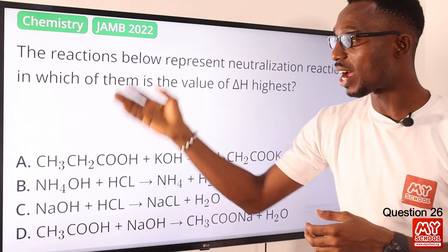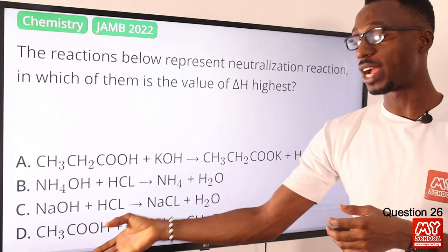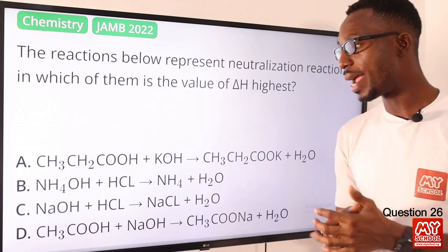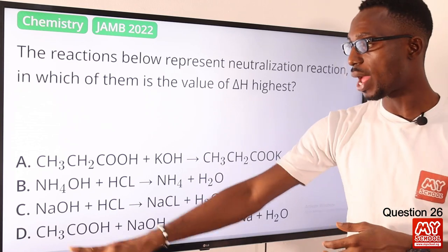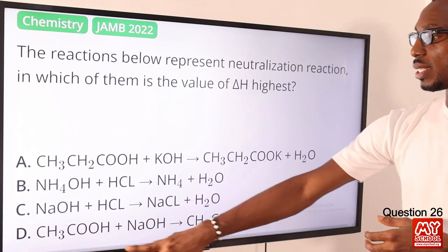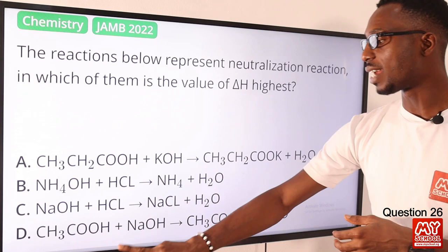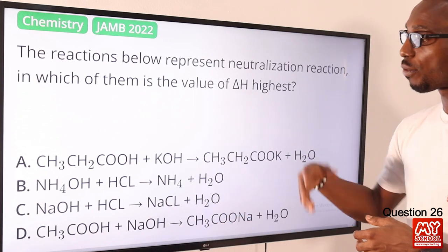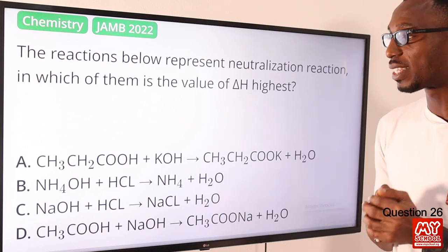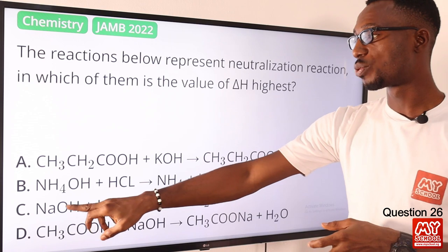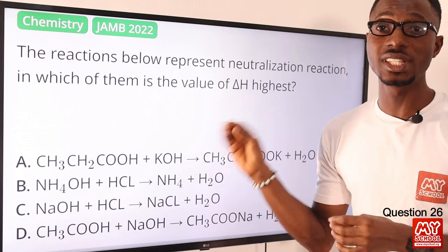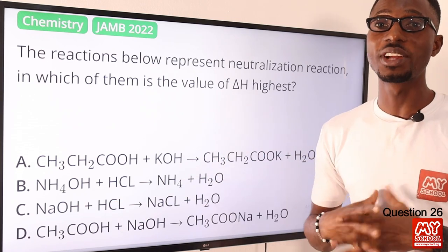Looking at the options: a weak acid and a strong base will not give a high value. Ammonium hydroxide — a weak base and a strong acid — your value will not be high. But sodium hydroxide and hydrochloric acid: strong acid and strong base — here you will have the IES value you are looking for. All these are neutralization reactions where you have salt and water formed. Ethanoic acid with a strong base still gives a low value. So option C is the correct option.